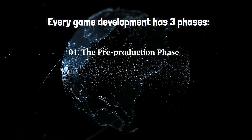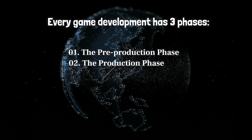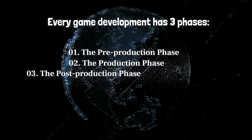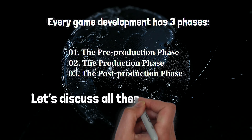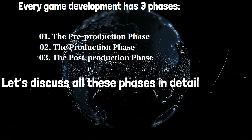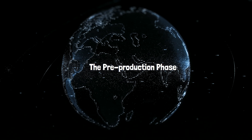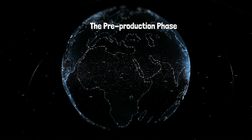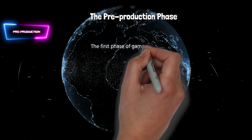Every game development has three phases: the first one is the pre-production phase, the second one is the production phase, and the third one is the post-production phase. Let's discuss all these phases in detail.